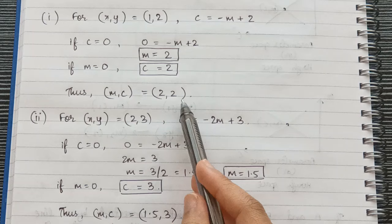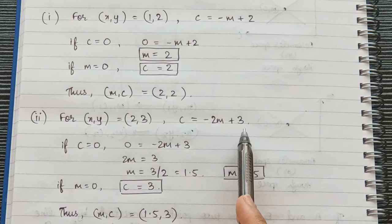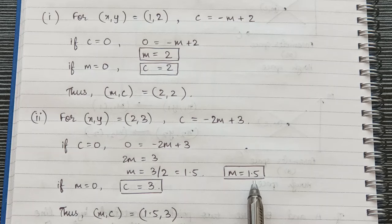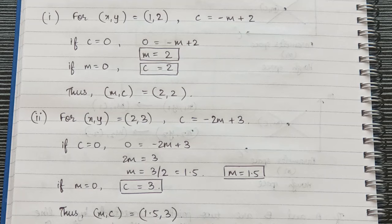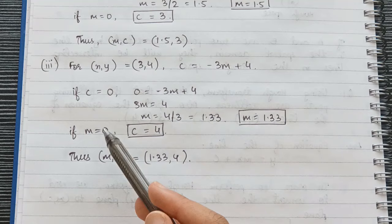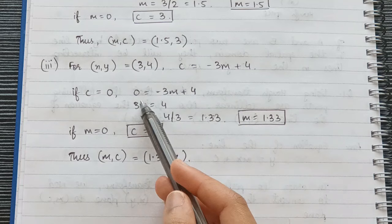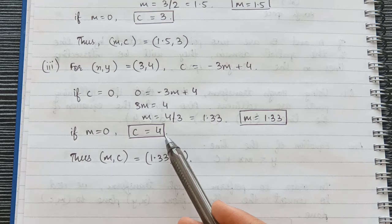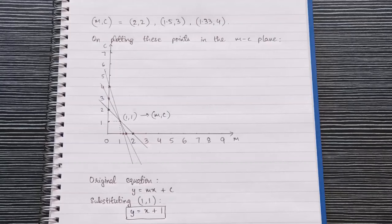For point 2 comma 3, the equation becomes c equal to minus 2m plus 3. If c equals 0, m equals 1.5; if m equals 0, c equals 3. So the m-c values are 1.5 comma 3. For point 3 comma 4, the equation becomes c equal to minus 3m plus 4. If c equals 0, m equals 1.33; if m equals 0, c equals 4. So the m-c values are 1.33 comma 4.